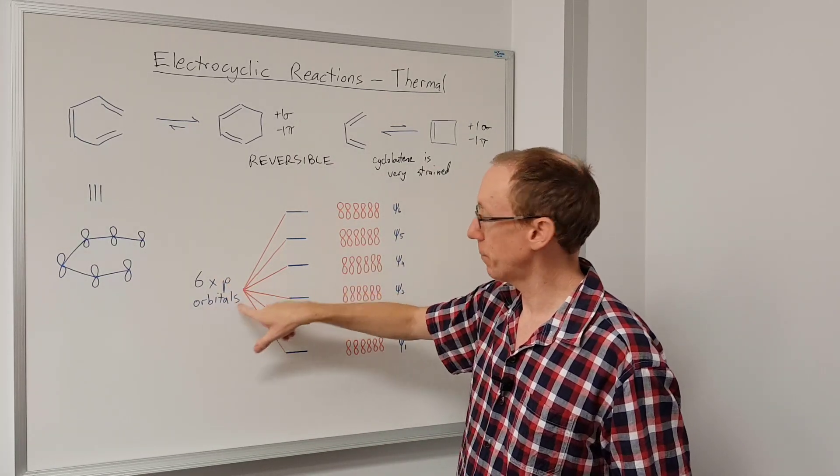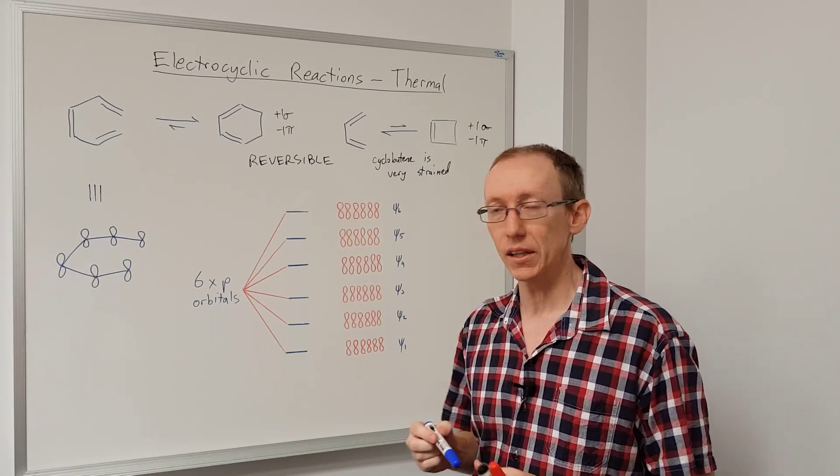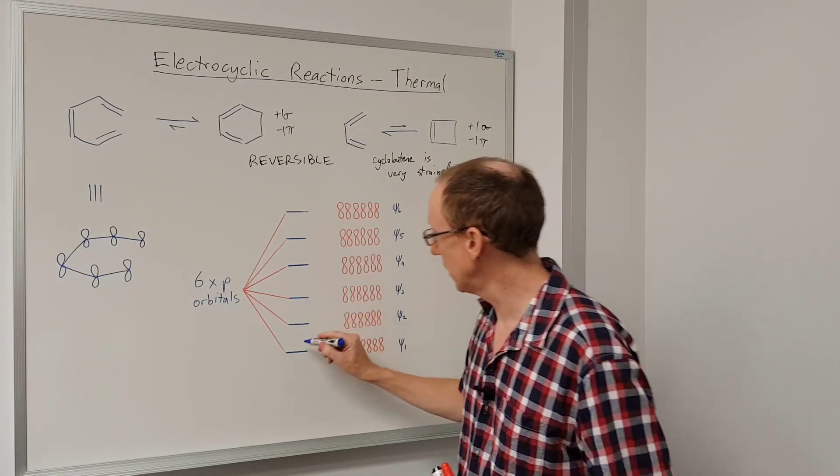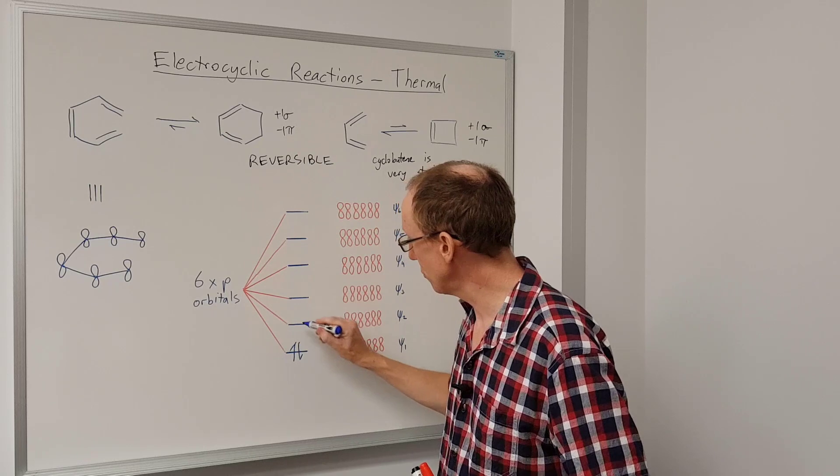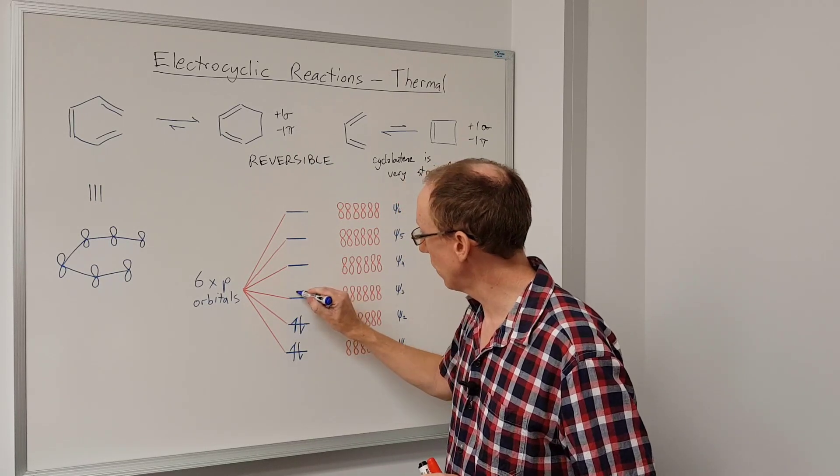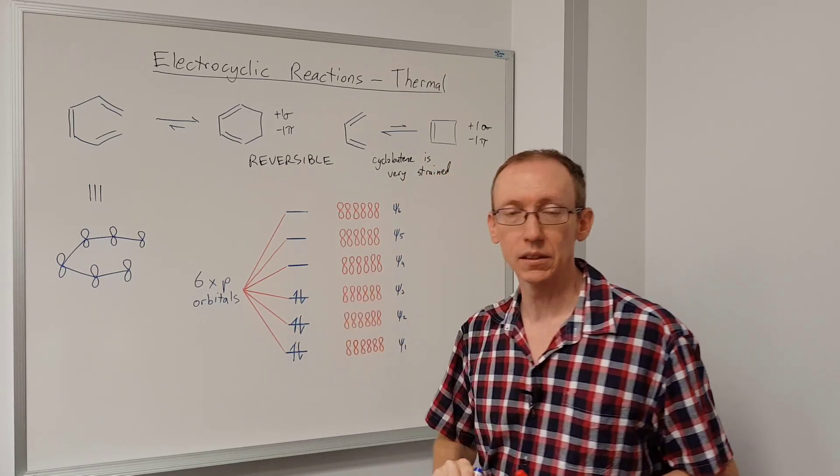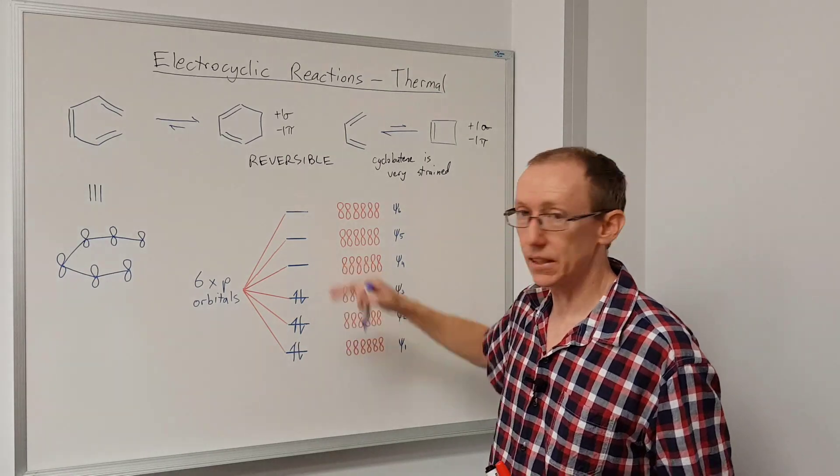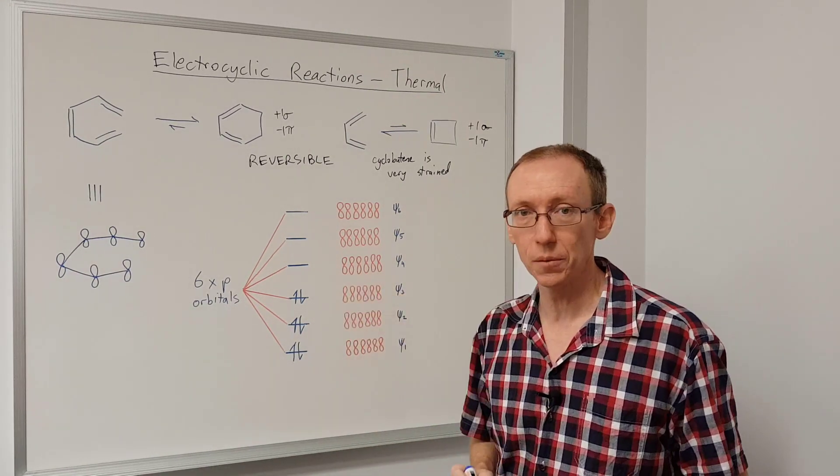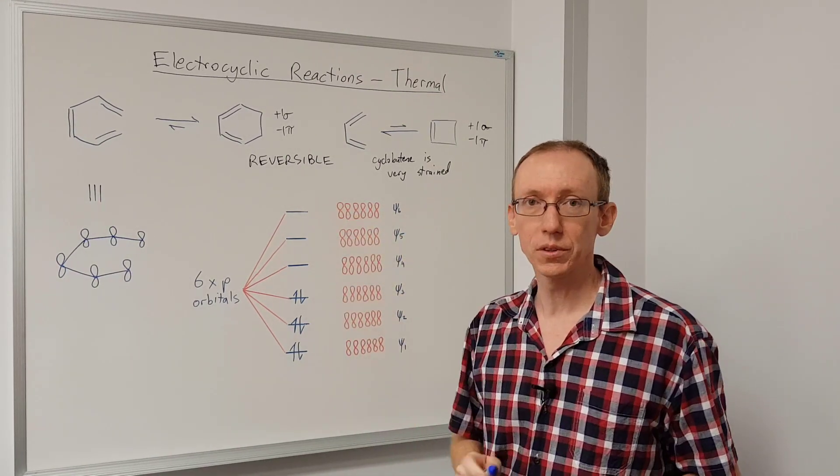If we have six p orbitals overlapping, each one is bringing one electron to the party. So we're going to have one, two, three, four, five, six. So the lowest three orbitals are going to be filled, and the top three orbitals are going to be unfilled.